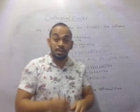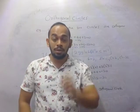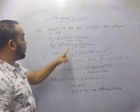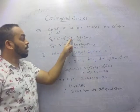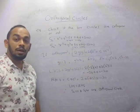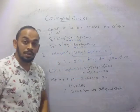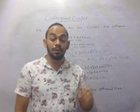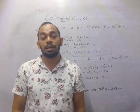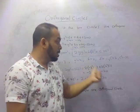If the question states that the two circles are orthogonal, they would probably not give you one of these six terms - g, g', f, f', c, or c'. Then you have to calculate that missing term using the orthogonality condition, supposing the two circles are orthogonal.